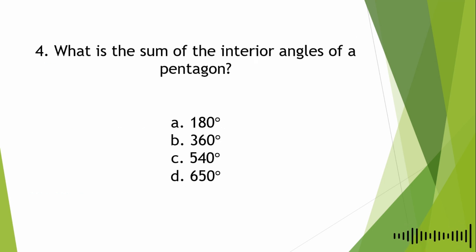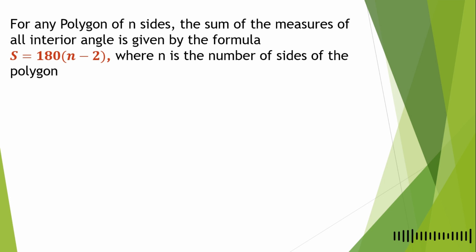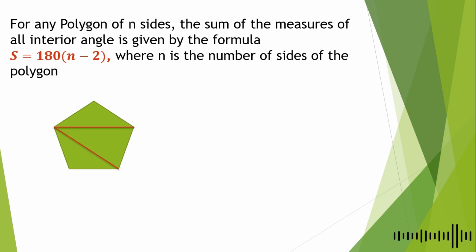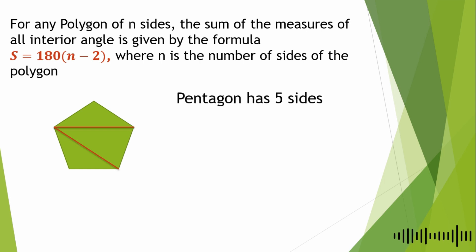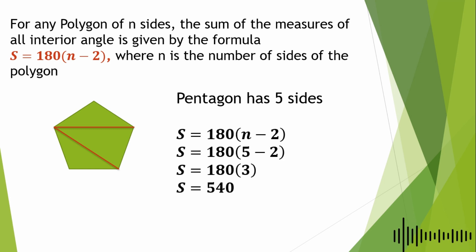Fourth question: what is the sum of the interior angles of a pentagon? A. 180°, B. 360°, C. 540°, D. 650°. For any polygon of N sides, the sum of the interior angles is given by the formula S = 180(N − 2), where N is the number of sides. A pentagon has 5 sides, so S = 180 × (5 − 2) = 180 × 3 = 540°. The answer is letter C.